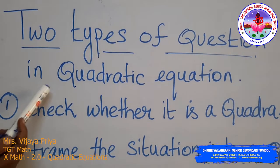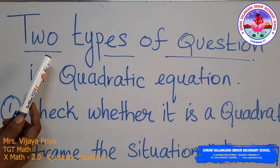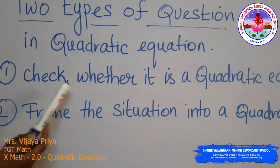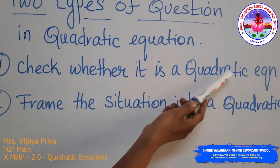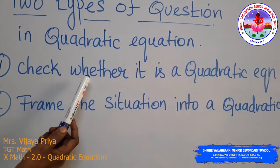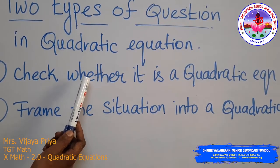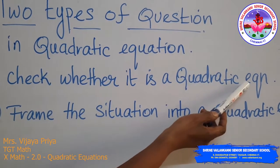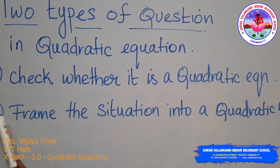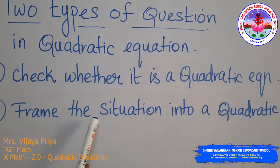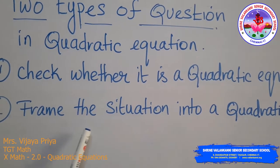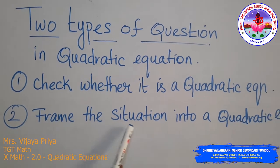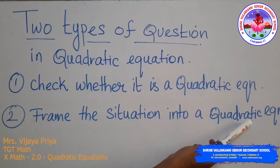In the first exercise of quadratic equations, there are two types of questions. The first is to check whether a given expression is a quadratic equation by expanding both sides. The second is to frame a given situation into the form of a quadratic equation.